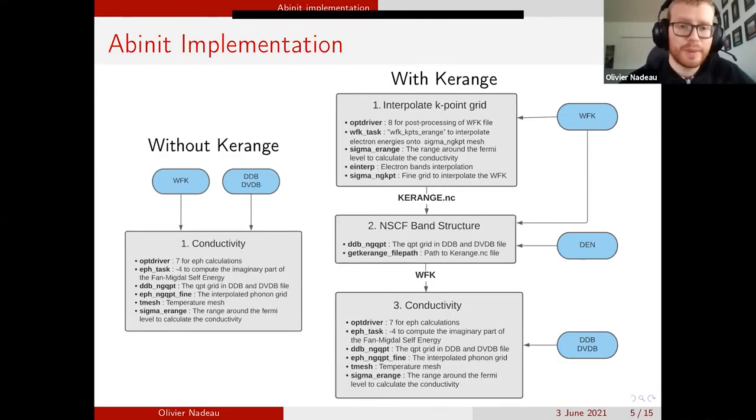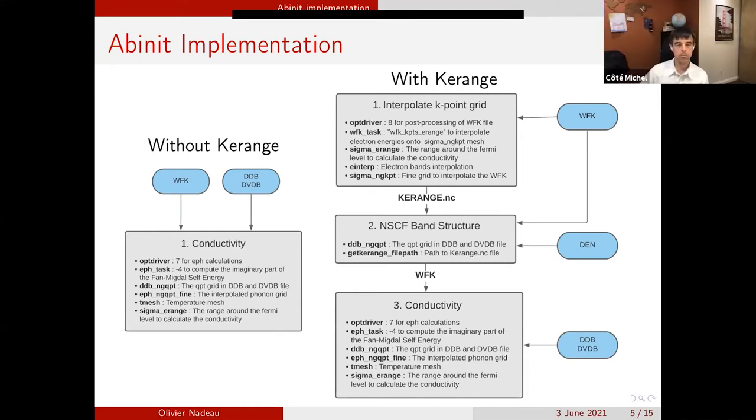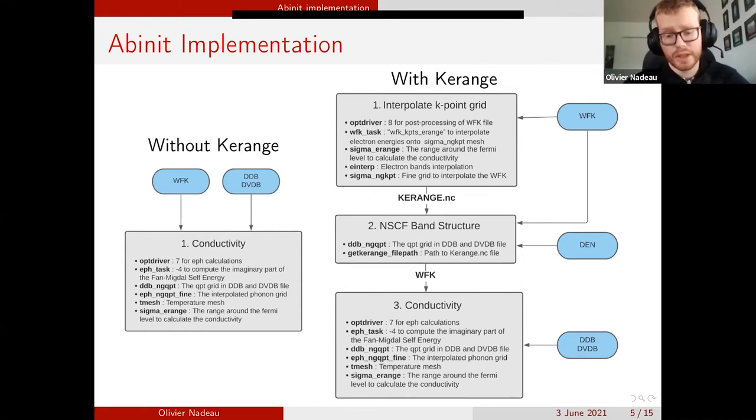Now let's talk about the Abinit implementation. So first, what does it mean to use K-Range? When we use K-Range, we'll reduce the wave function file by only computing the states which are relevant to the conductivity. This is because only the states close to the Fermi level are relevant to the conductivity. When we don't use K-Range, we'll start from a wave function file obtained non-self-consistently and from a dvdb file. Then we can directly calculate the conductivity.